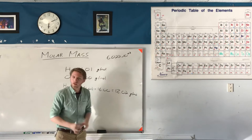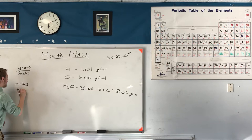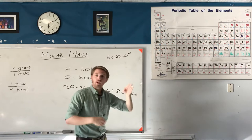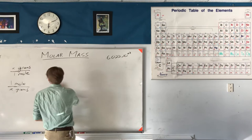Molar mass looks like a conversion factor — because it is. It can be written as grams divided by moles, or moles divided by grams. It's always one mole and always some number of grams. The molar mass is different for all atoms and molecules because they all have different weights, but it's calculated the same way we found molecular mass before. Let's use water as an example to see how this works.